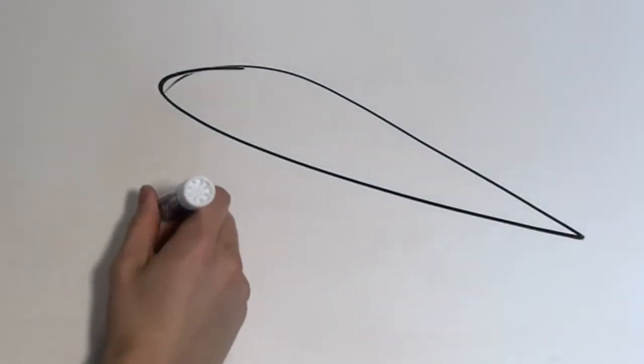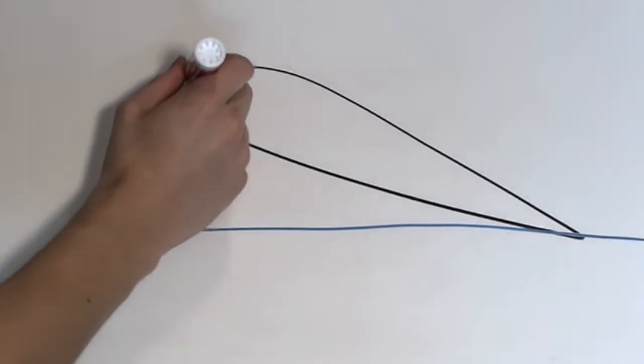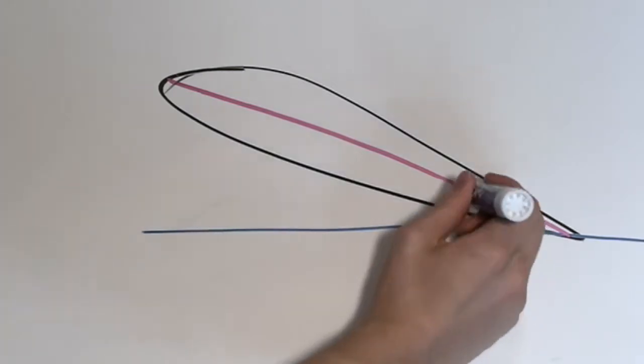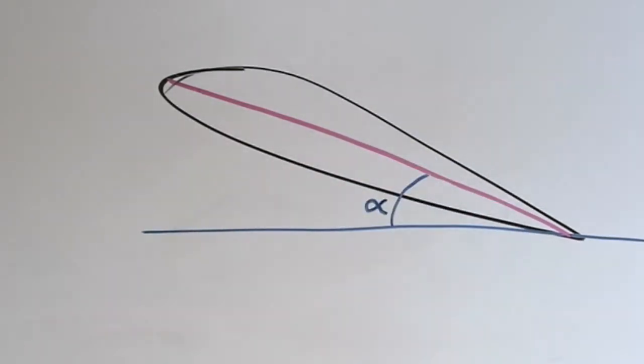When a fluid is flowing past the surface of a body, it exerts a force on it. The lift is the component of this force that is perpendicular to the oncoming flow direction, and the drag force is the component of the surface force parallel to the flow direction.